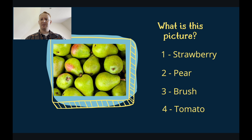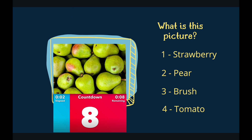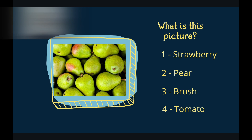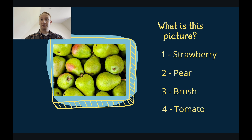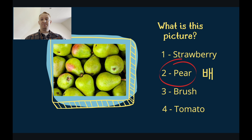What is this a picture of? Is it strawberries? Is it pears? Is it brushes? Or is it tomatoes? You have 10 seconds to answer. It is of course pears. These pears are green. Some of these pears have red marks. Pears grow on trees.